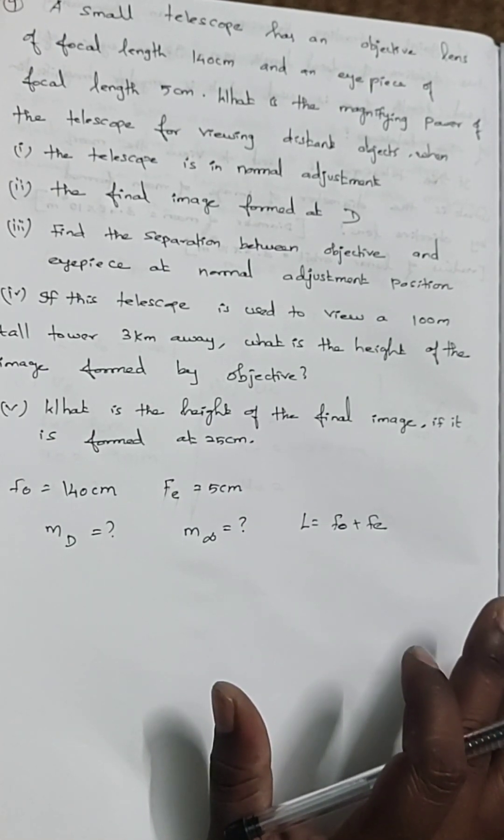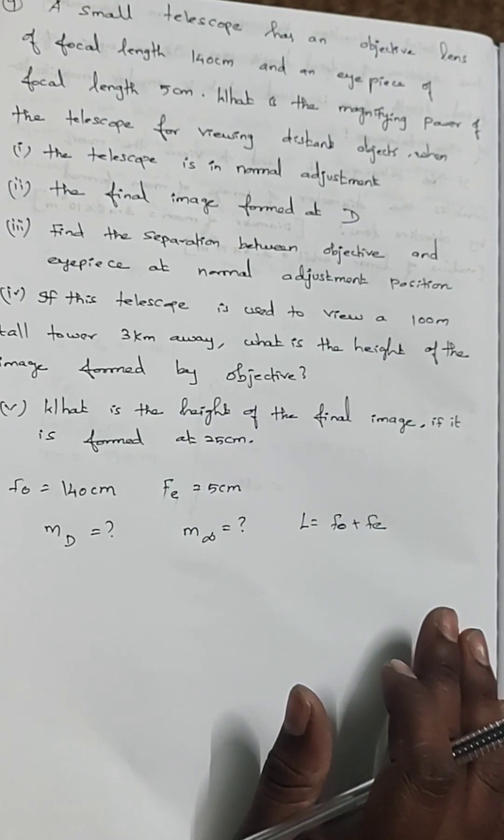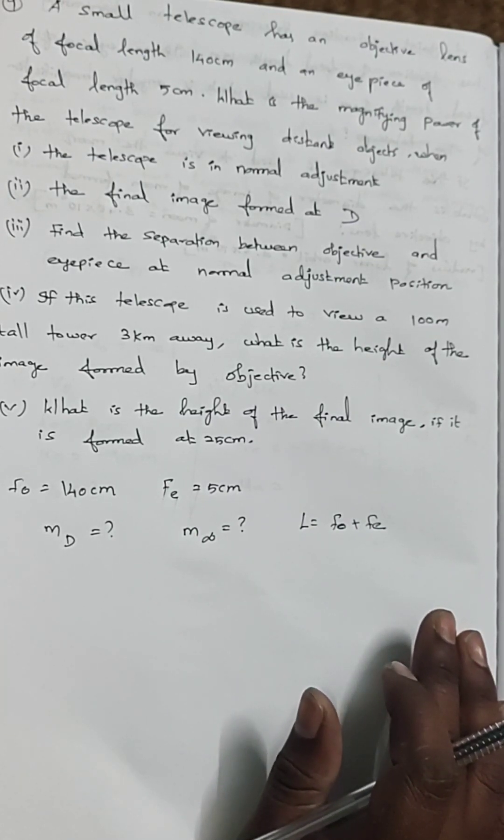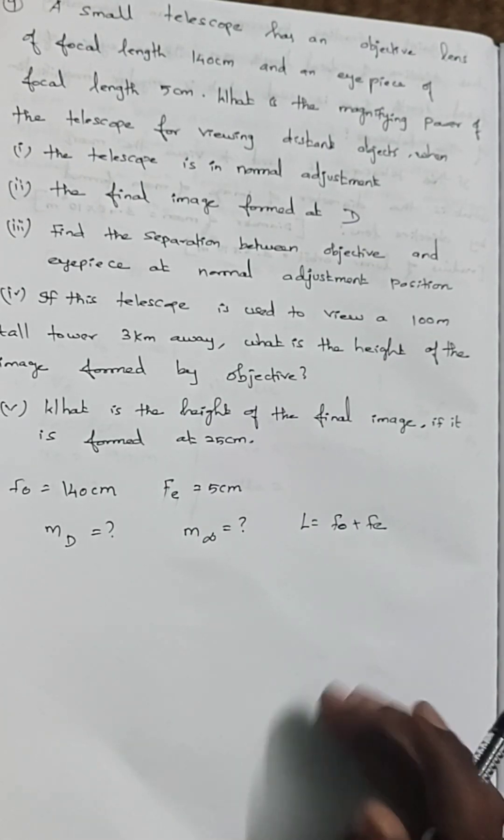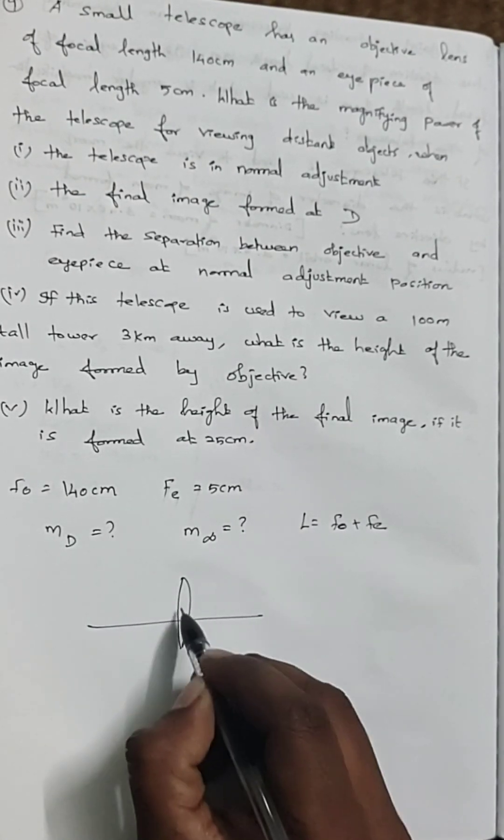If the telescope is used to view a 100 meter tall tower 3 kilometer away, what is the height of the image formed by the objective? Let us consider a small lens, this is the objective piece.